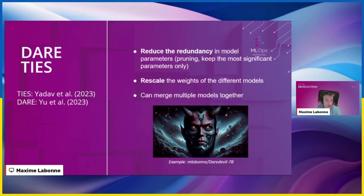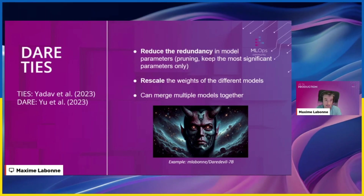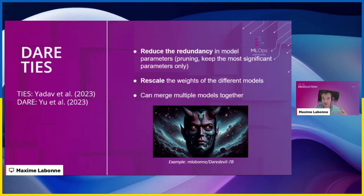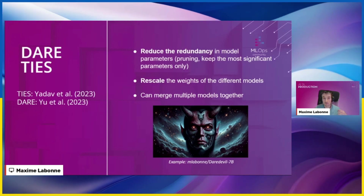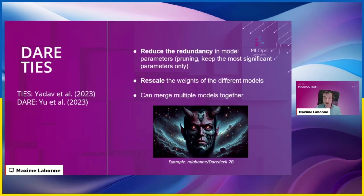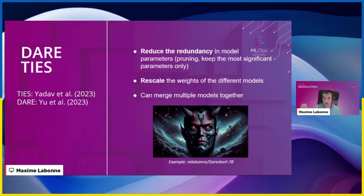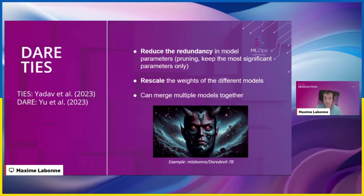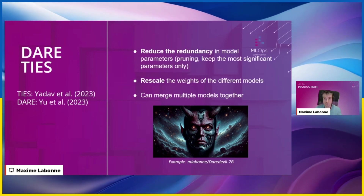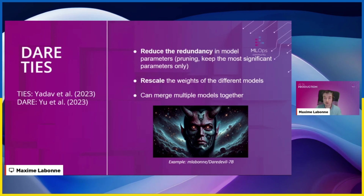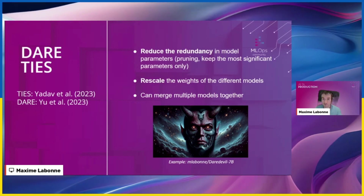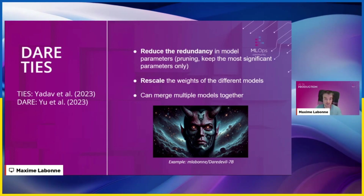Another popular merge technique is TIES/DARE. The main intuition behind these two techniques is that we want to reduce redundancy in the model parameters, since these parameters tend to store information over and over. We use techniques like pruning — here, pruning means resetting fine-tuned weights back to their original base model values — and keeping only the top-k percent most significant parameters. Then you rescale the weights of the different models to ensure they correspond, and there's also a sign election step.